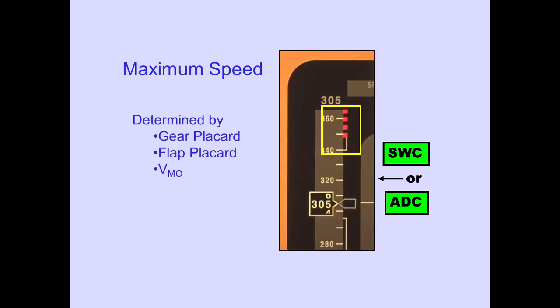Maximum speed is displayed as red boxes. This indicates the maximum speed determined by gear, flaps, or VMO limits. Maximum speed in this example is 348 knots. The stall warning computer or selected air data computer provides this information.